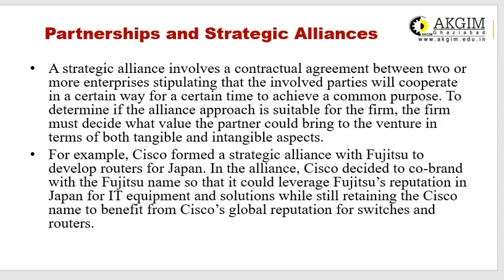A strategic alliance involves a contractual agreement between two or more enterprises stipulating that the parties will cooperate in a certain way for a certain time to achieve a common purpose. The firm must decide what value the partner could bring in terms of both tangible and intangible assets. For example, Cisco formed a strategic alliance with Fujitsu to develop routers for Japan. Cisco decided to co-brand with Fujitsu's name to leverage Fujitsu's reputation in Japan for IT solutions, while retaining the Cisco name to benefit from Cisco's global reputation for switches and routers.